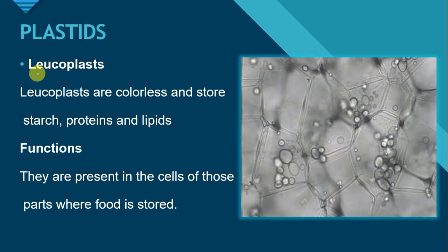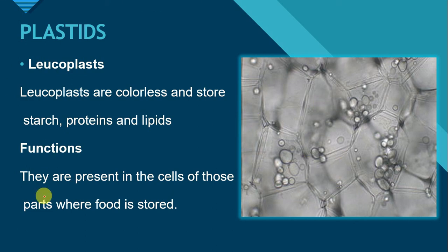The third type are leukoplasts. 'Leuko' means colorless and 'plast' means plastid. So leukoplasts are the type of plastids which contain colorless pigments, which is why they are not visible. Leukoplasts store starches, proteins, and lipids. They are present in the cells of those parts where food is stored — such as in roots and underground tubers — and their function is to store food in the form of starch, proteins, and lipids.